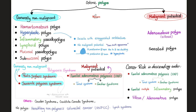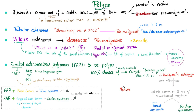The polyps in your colon are generally non-malignant, and these are some examples. Sometimes they are malignant, especially adenomatous or villous adenomatous polyps and serrated polyps. There are many diseases and syndromes where we have many polyps in the colon, and these include familial adenomatous polyposis, but exclude Lynch, because Lynch is non-polyposis.